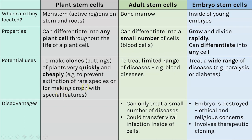Adult stem cells can only differentiate into a small number of cells - for example blood cells. This can still be useful to treat a range of blood diseases, but because these stem cells can only differentiate into blood cells, it is a small number of diseases they can treat. Also, the mechanism can involve viruses, meaning you could transfer a viral infection. Embryonic stem cells, because they can differentiate into any type of cell, could be used to treat a wide range of diseases - you would allow the stem cell to differentiate into a particular specialized cell to replace faulty ones. For example, you could replace cells in the pancreas to treat diabetes.